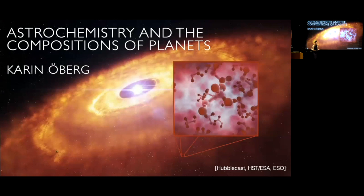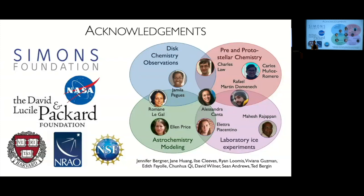I will give you an update on where we are in trying to understand the chemistry that happens where planets are forming in disks, such as the one illustrated here around young stars. The vast majority of the work I will be presenting is not primarily done by me, but by a really amazing team of junior scientists in my group that span the full range of methods — from theory to observations to laboratory experiments — as well as the different stages of star and planet formation.